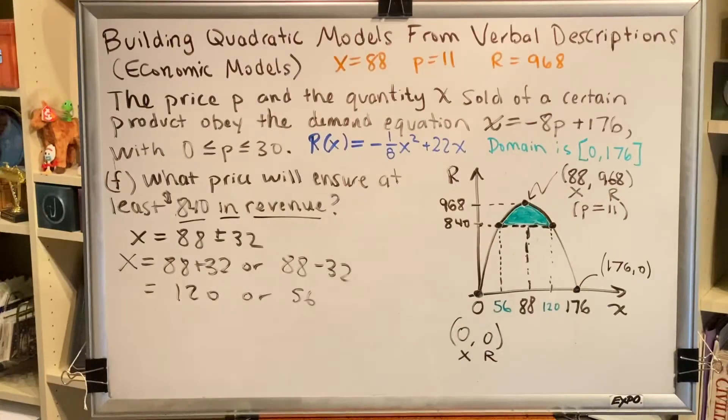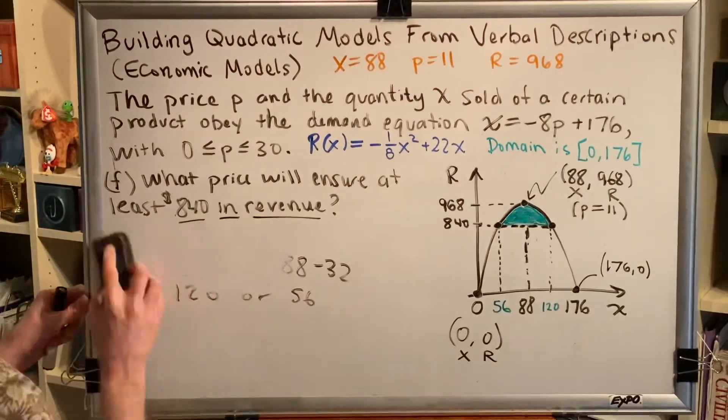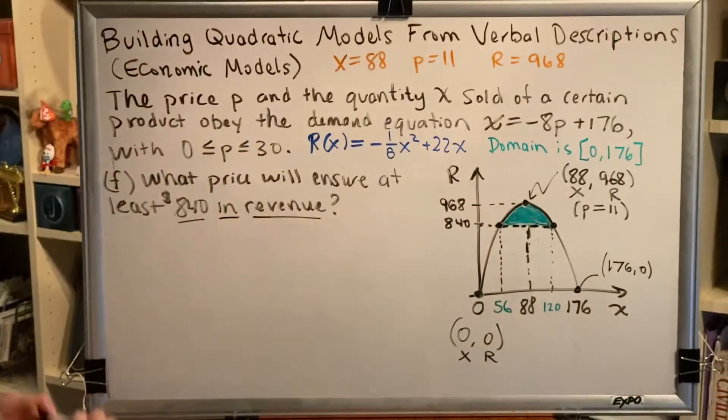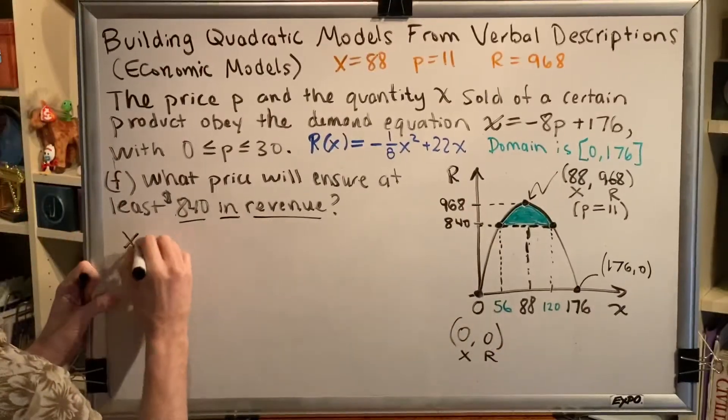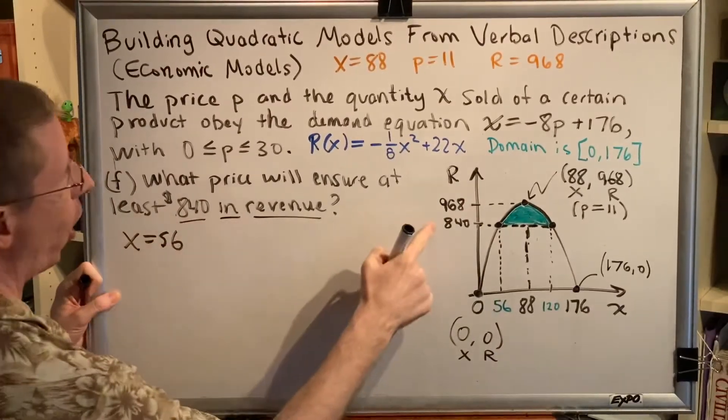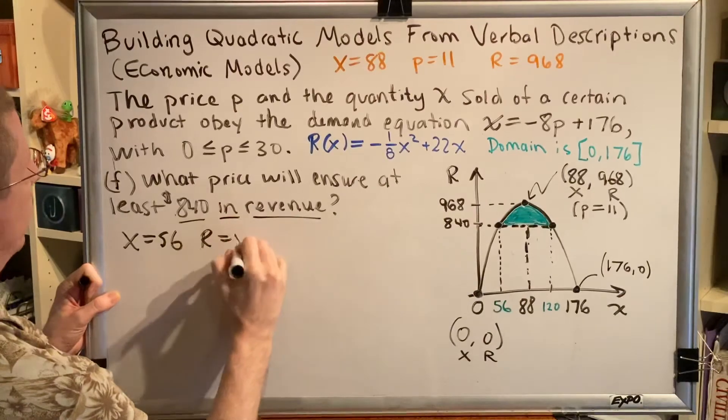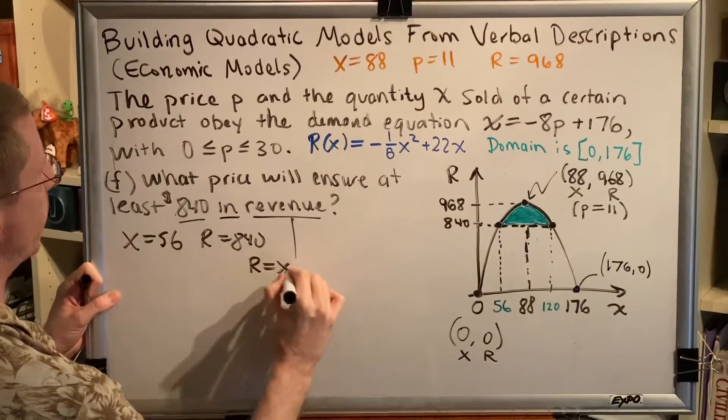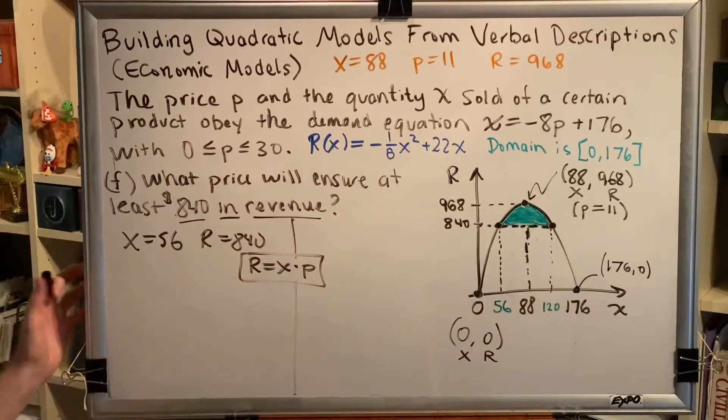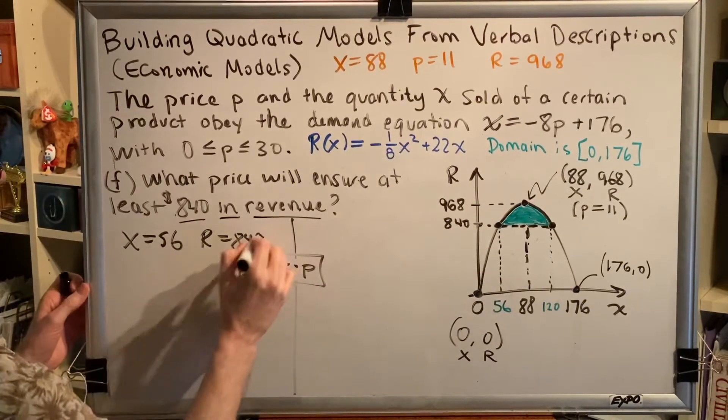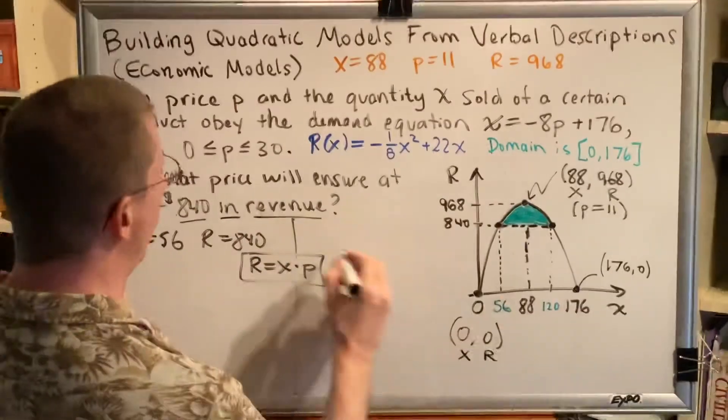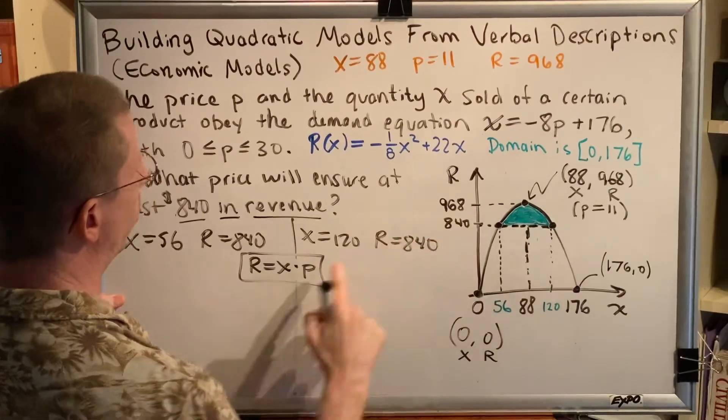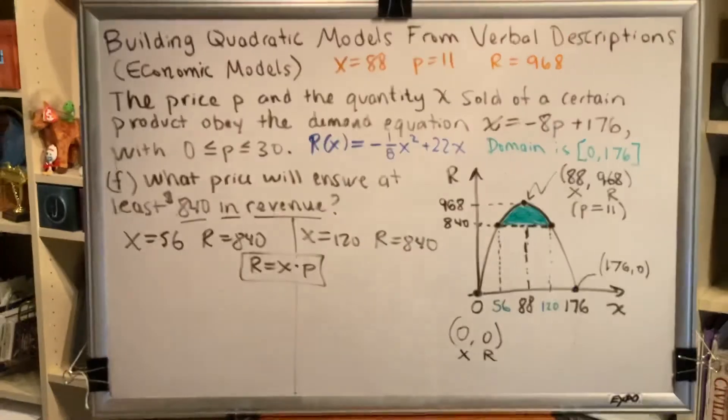So what we observed is that if you sell 56 items, you'll bring in $840. And if you sell 120 items, you will also bring in $840. This is almost the answer to our question. The question says, what price? These are quantities. So we have to find a way to convert. x is 56, R is 840. But there's a wonderful formula, R = x × p, that will allow us to use those two values to find the price that we're looking for. And while we're at it, let's go ahead and write x = 120, R = 840. We'll use the equation again and get the two prices that we're looking for.